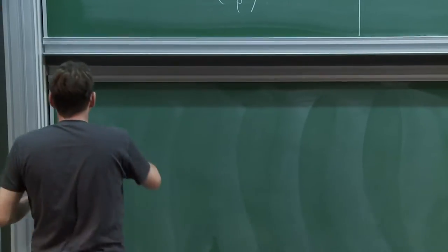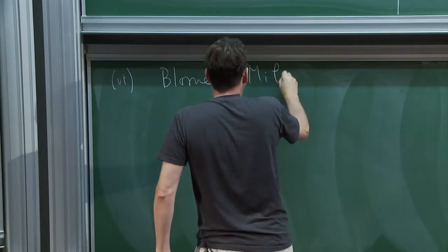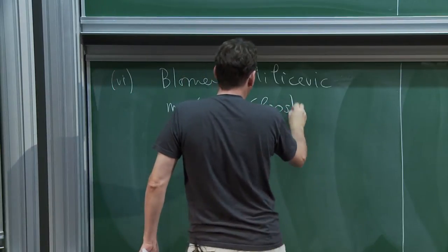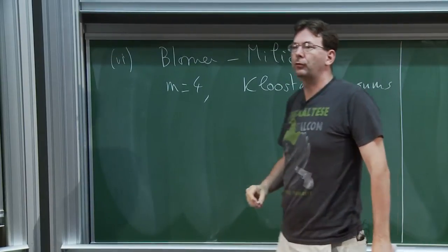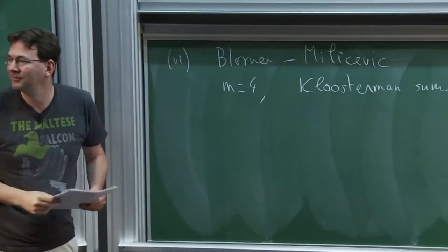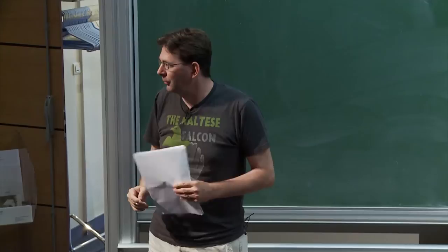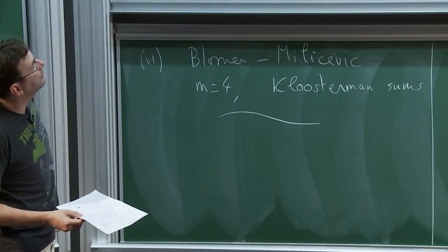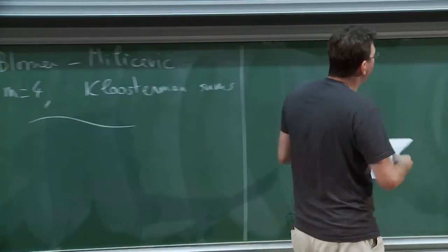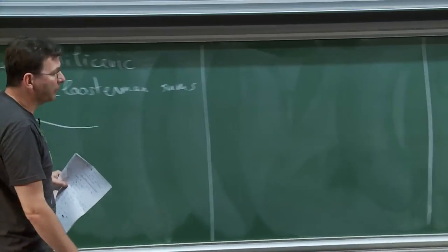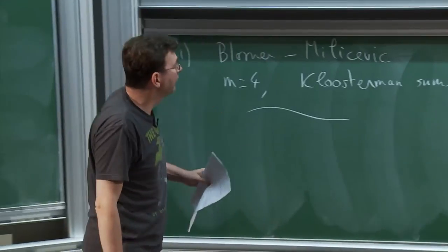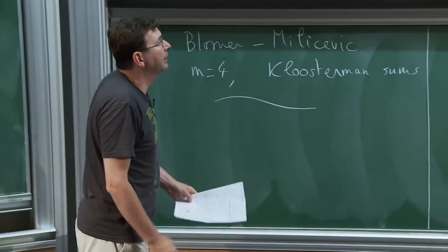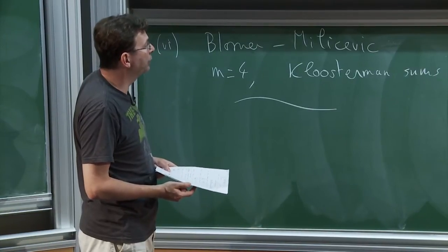A last example: in a recent work of Bloomer and Milicevic, the case is m equals 4 and it is again related to Kloosterman sums. This is to show that such sums come up in many applications — certainly not an exhaustive list. What I want to present is how one handles such sums in many contexts. This will be a well-motivated way to introduce one of the most important invariants of trace functions and of the underlying algebraic objects: the monodromy group.